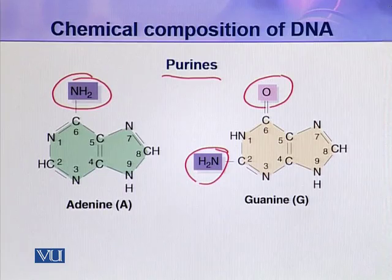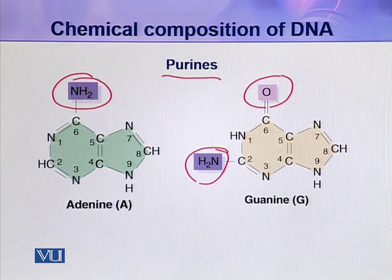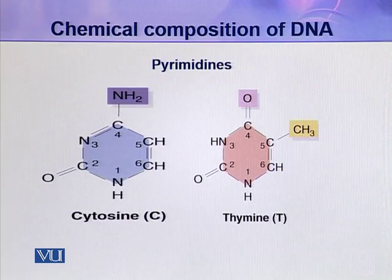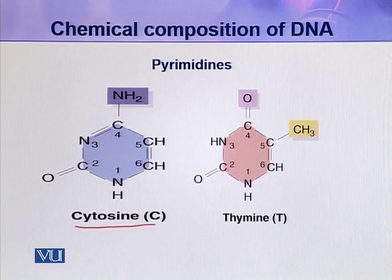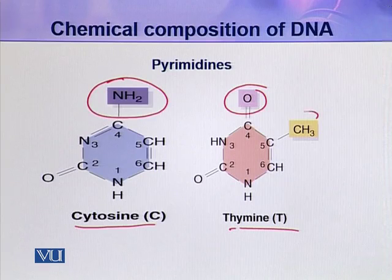Look at the numbering — again they are conventionally numbered, but here no prime designation is given, to distinguish these atoms from the numbered atoms in the pentose sugar. The next two nitrogenous bases are pyrimidines: cytosine and thymine. These two are slightly different from each other — the difference lies at specific positions — so these two are derivatives of pyrimidines.